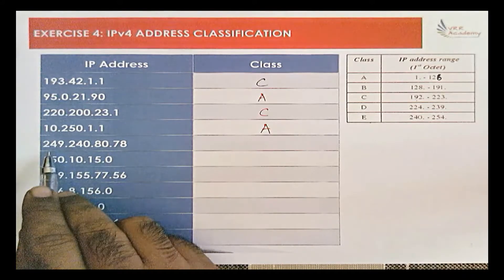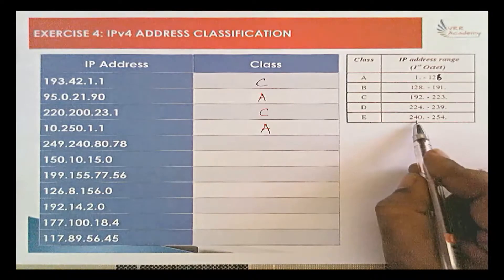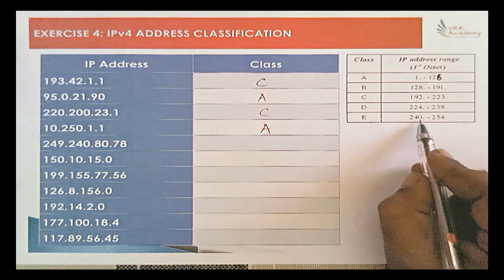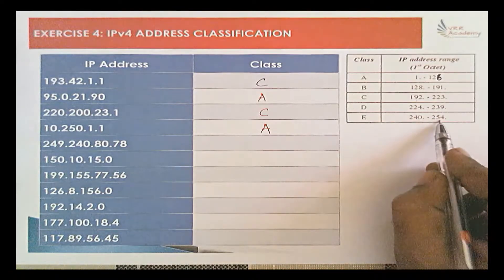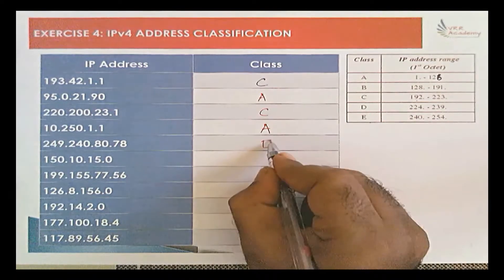For 249.240.80.78, the first octet value is 249, which falls in the range of 240 to 254, so it is a Class E IP address.